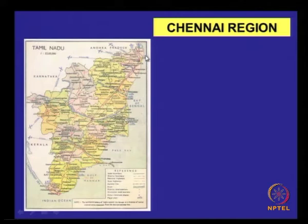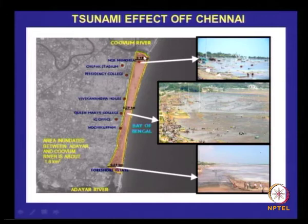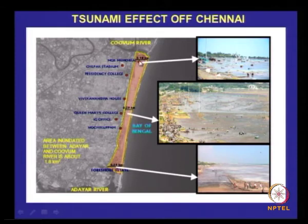Let me show you the Chennai area. Chennai area is in this location — this is the stretch for the Chennai region. We did the survey of the Marina Beach, one of the longest beaches in the world. You see the kind of inundation — the inundated area between Adaiar and the Guam river is approximately 2.9 kilometers, and in some sections approximately 0.29 to 0.5 kilometers. That is the kind of inundation they had.